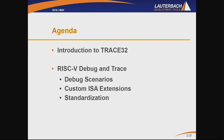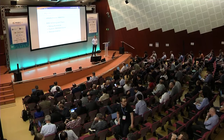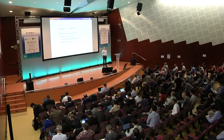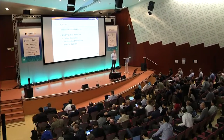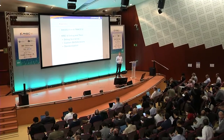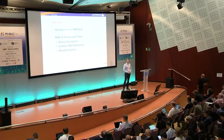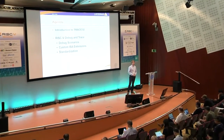For those not familiar with our tool, I will give a very brief introduction about what we actually do. Then I will jump right into RISC-V Debug and Trace, what we've been working on and struggling with lately, with the aid of some debug scenarios. Then I will get into our support for custom ISA extensions, and finally, from our perspective, the necessity and importance for standardization of both Debug and Trace.